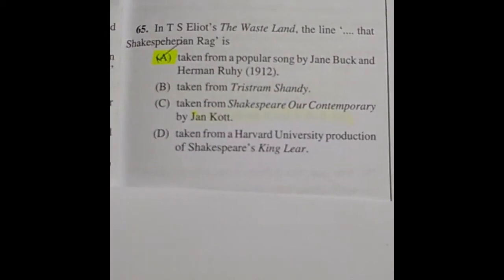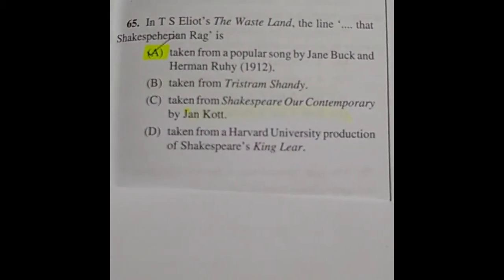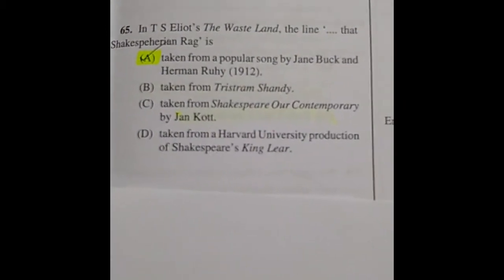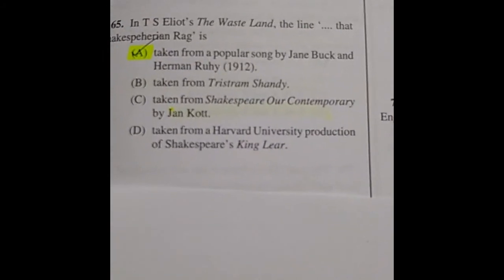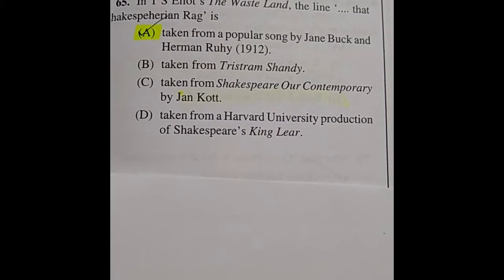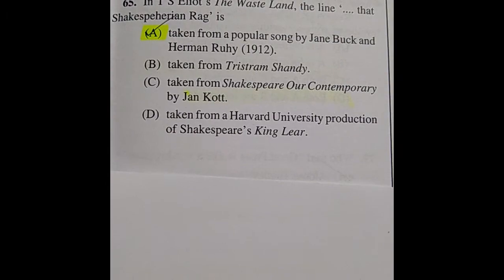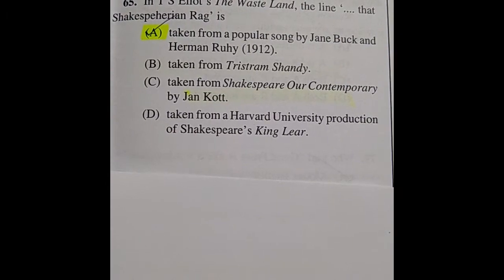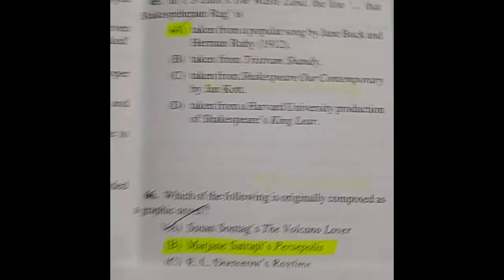Question 65: In T.S. Eliot's The Waste Land, the line 'The Shakespearean rag' is taken from a popular song by Gene Buck and Herman Ruby in 1912.